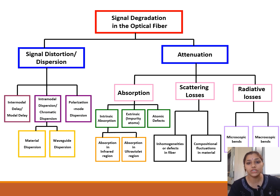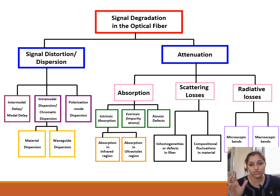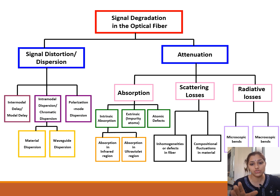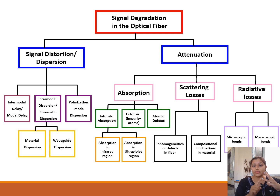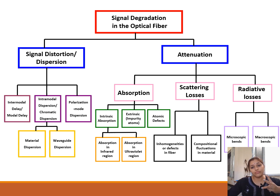Now let's talk about attenuation. I have prepared a separate video on attenuation and how to solve numericals based on it — the link is given in the description box. Attenuation, that is signal degradation in amplitude, is because of three reasons: absorption of light, scattering of light, and radiative or bending losses.